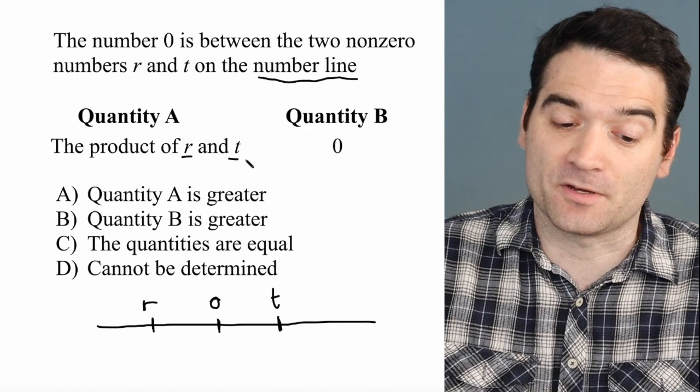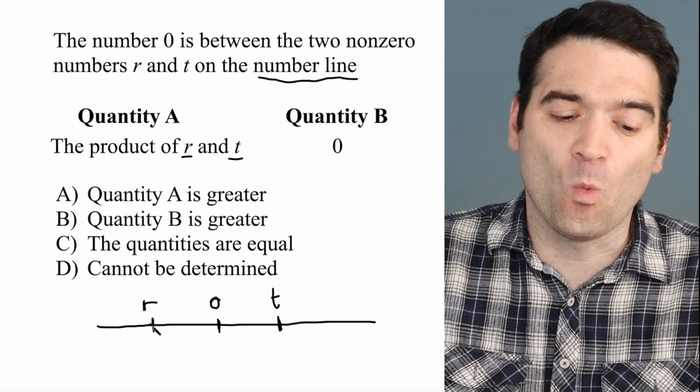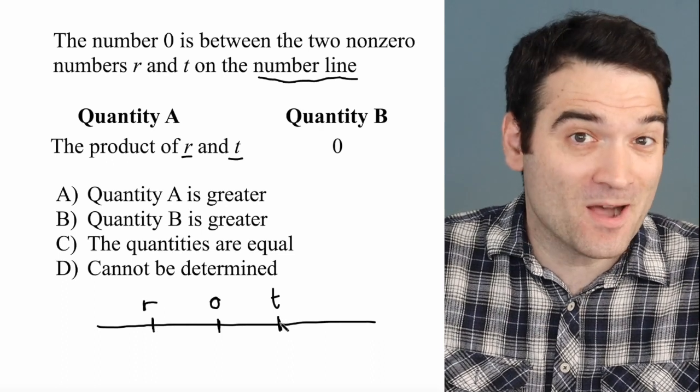If we're looking at the product of R and T, the multiplication, we see very quickly that one of these numbers is going to be negative and one of them is going to be positive.